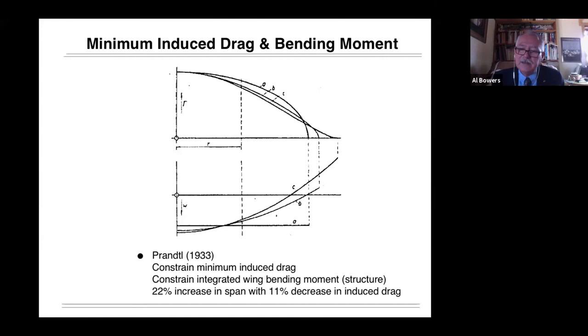This curve C, by the way, is generated from the same structural weight as curve A. The weight between those two wings is the same. The way Prandtl did this was he used the integrated bending moment as an analog for the structure, as a model for the structure. And by doing this, he ends up with making the weight of the wing being the same. This curve C, by the way, is a 22% increase in span with an 11% decrease in the induced drag for the same structural weight.